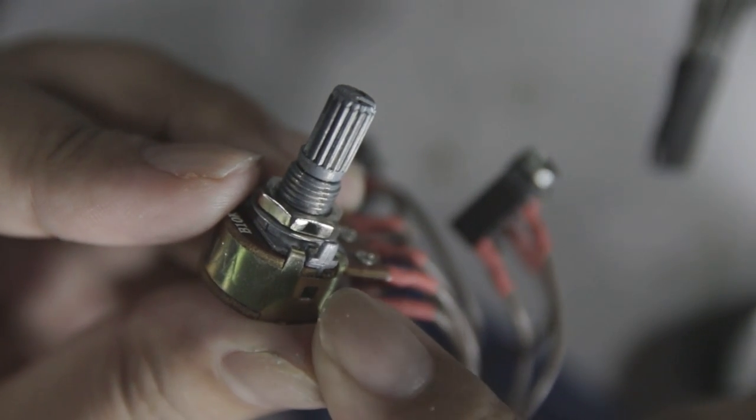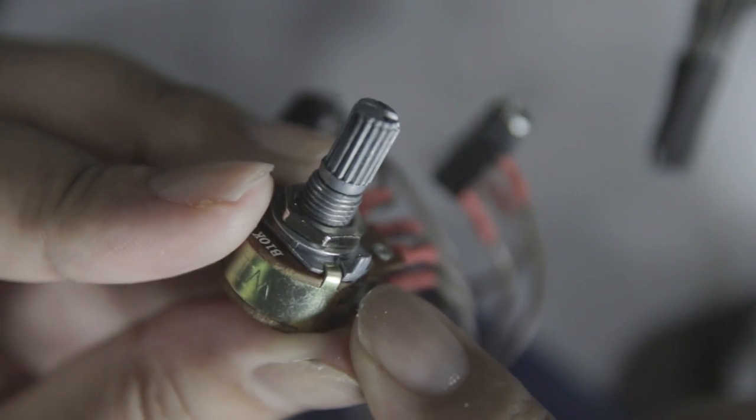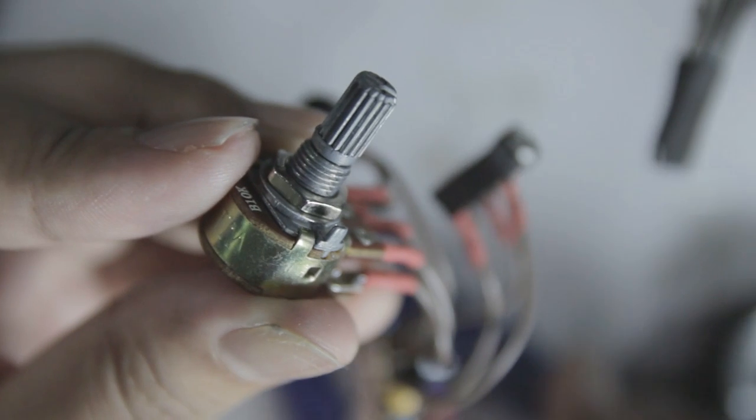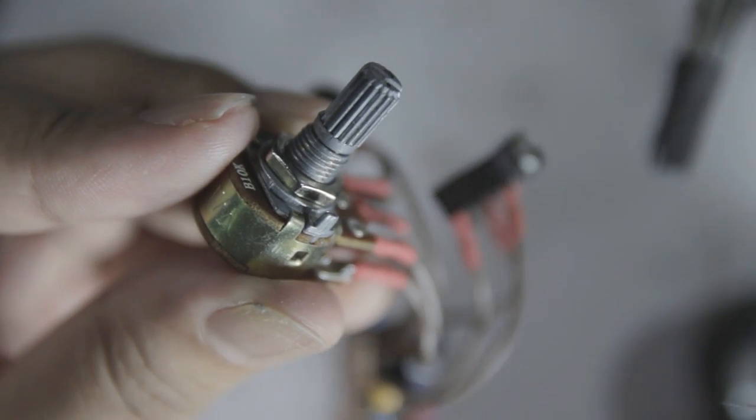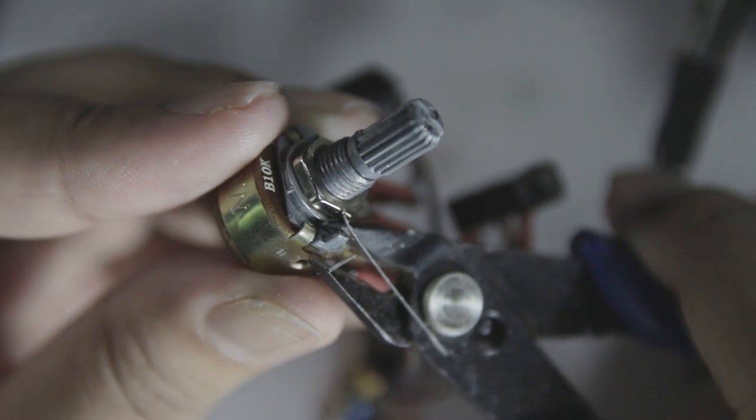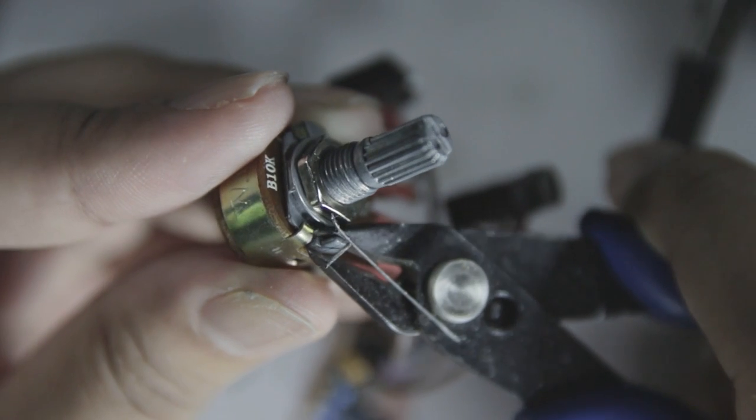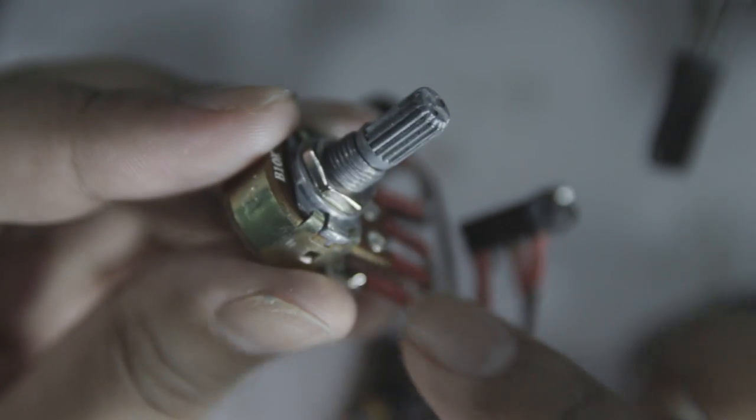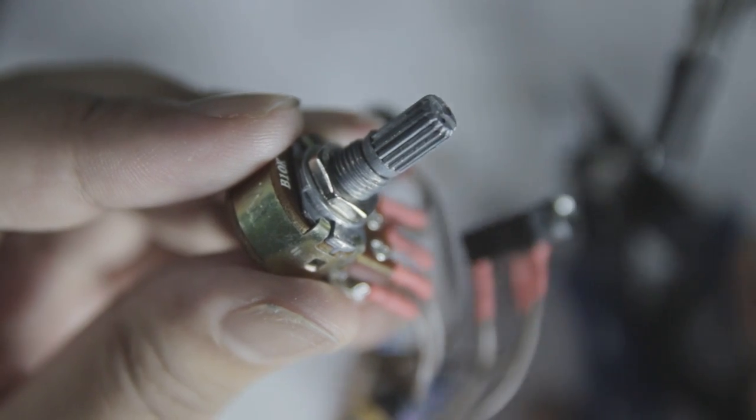Before putting everything into the box, notice that the potentiometer has a little stabilizer post on it. I could drill a little hole alongside the main hole to accommodate this stabilizer post. Or I can just simply pop it off like so. Now I can go ahead and finish off our amplifier.